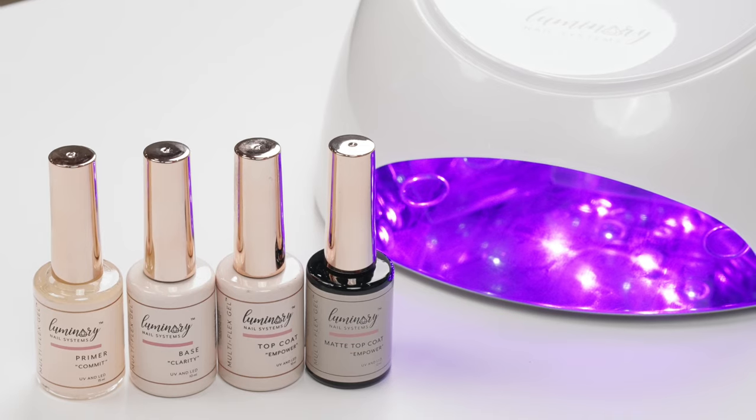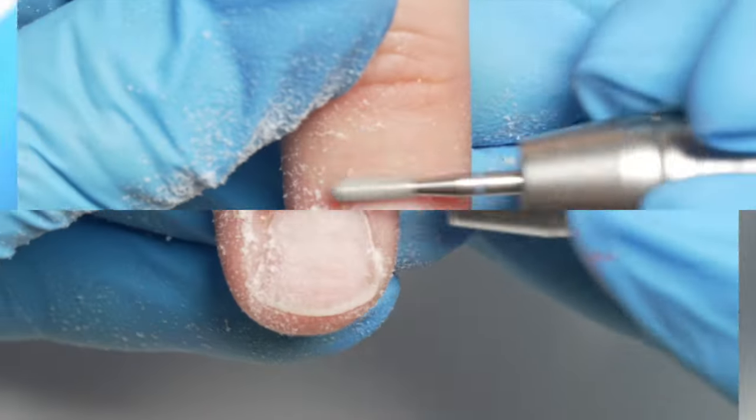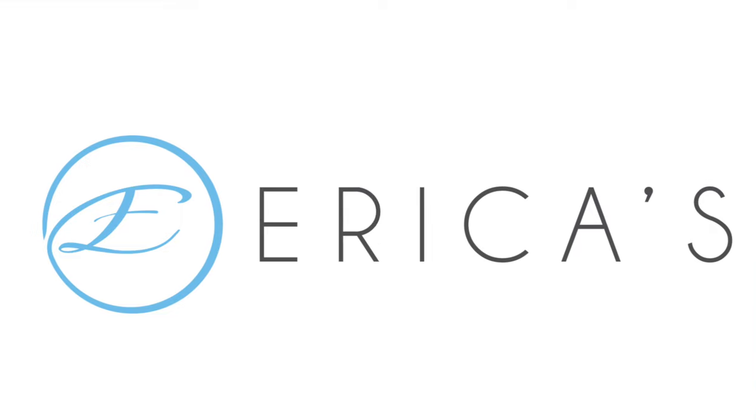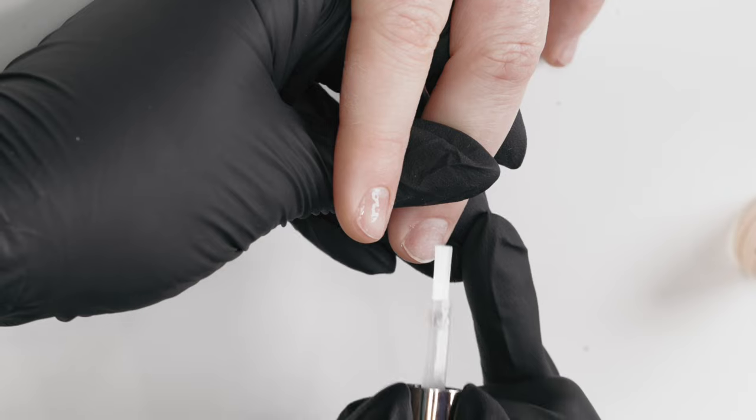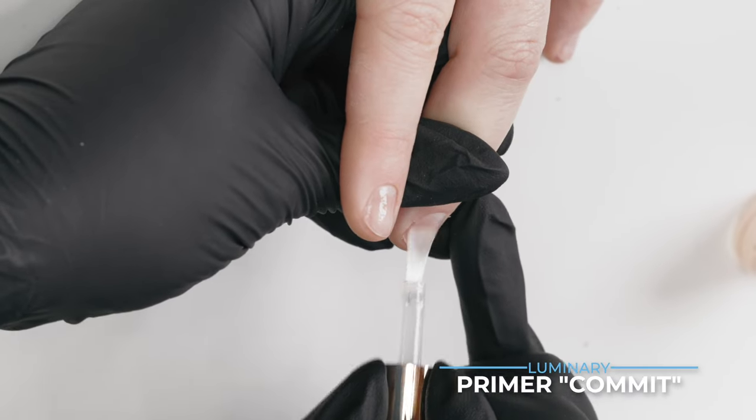So let's go ahead and do some Luminary nails. We're going to use Luminary commit, which is a primer. We've done our cuticle work. We've done our shaping. Now we're going to go ahead and jump in.